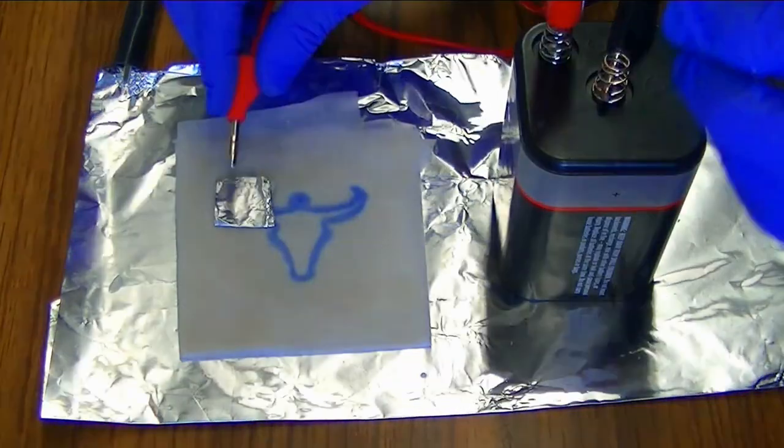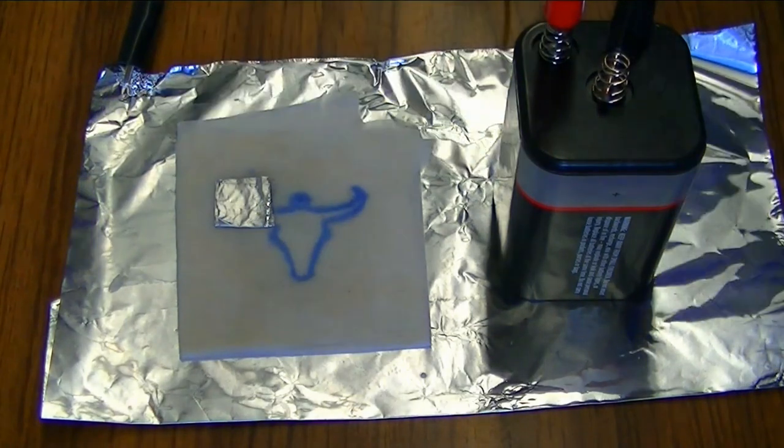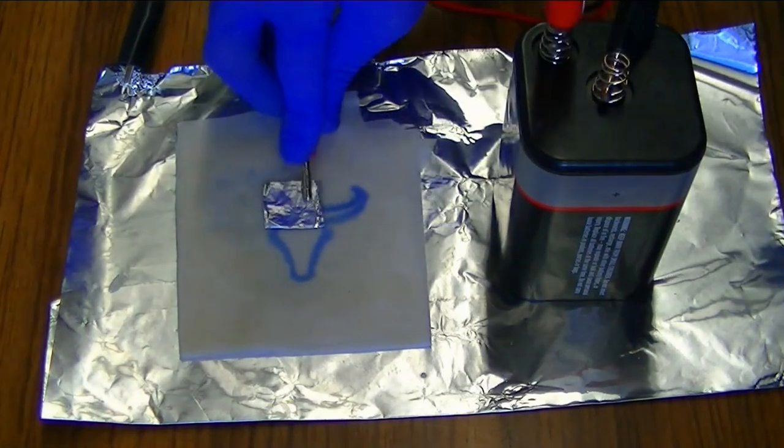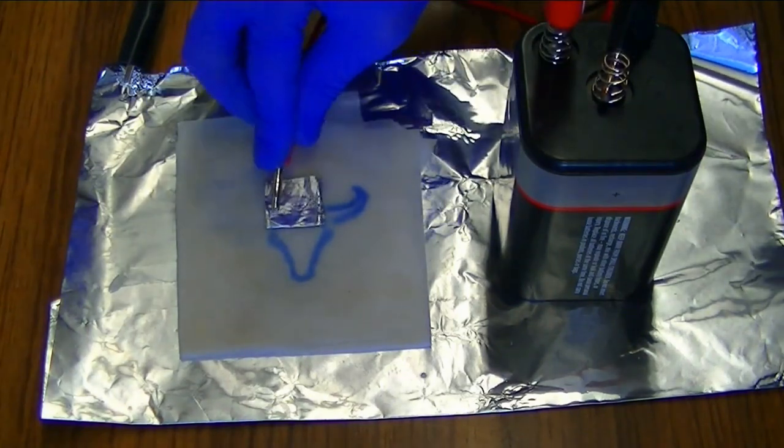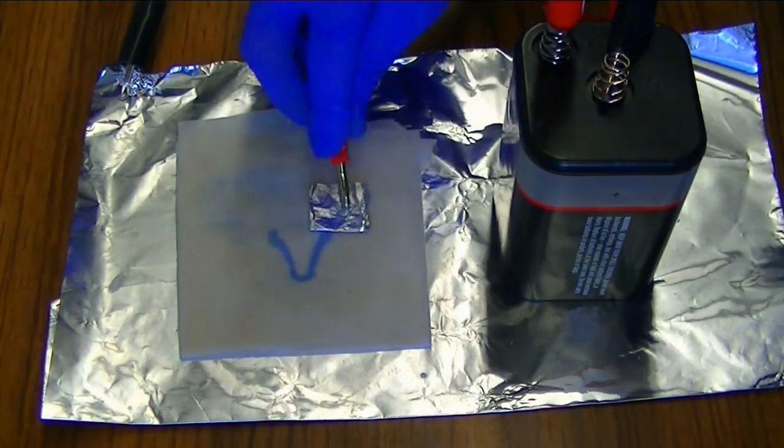Let me show you one more cool trick you can do. In this case the negative terminal of the battery is attached to the aluminum foil while I am touching the positive terminal of the battery to a piece of foil placed on the surface of the paper towel.